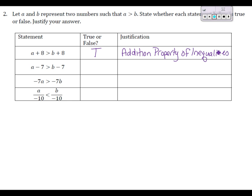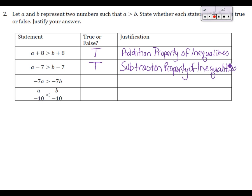Likewise, in the second statement we're subtracting the same number from both sides. The subtraction property of inequality states that the left side remains greater than the right side — it doesn't change that. So that is also TRUE. With addition and subtraction, inequalities don't cause us any problems; the inequality sign stays the same.